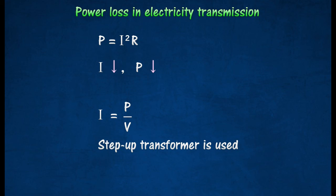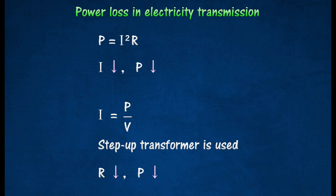This explains why alternating current, rather than direct current, is used for long distance electricity transmission. The resistance of the cables is also reduced by using thicker or better conducting material.